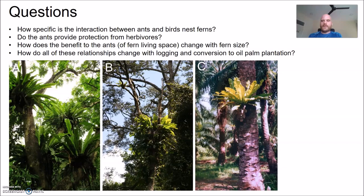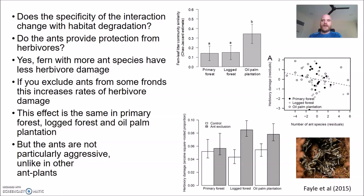The research questions I'll address here are: how specific is the interaction between ants and ferns, whether ants protect ferns from herbivorous insects, whether there's a benefit to the ants and whether that changes with fern size, and whether all those relationships are altered by anthropogenic habitat change — specifically logging and conversion to oil palm plantation. Addressing specificity first: in primary forest and logged forest, there's relatively low overlap between ant communities in ferns and those on the forest floor, so fern communities are relatively specialized. But in oil palm plantation, the overlap is much greater — the interaction becomes less specific.